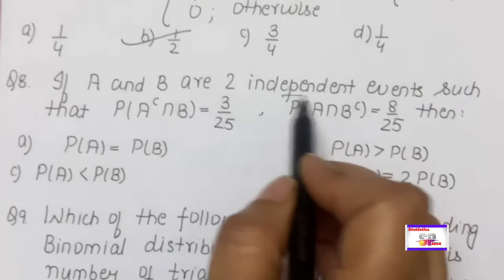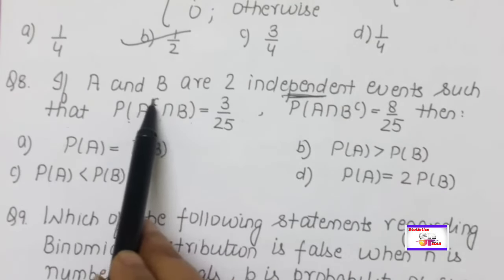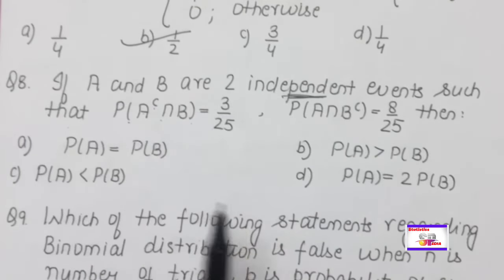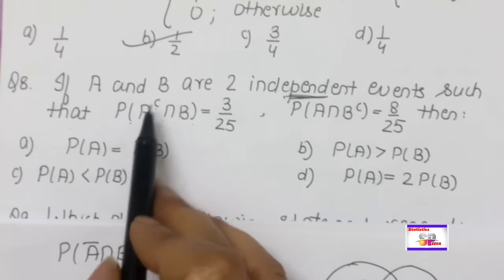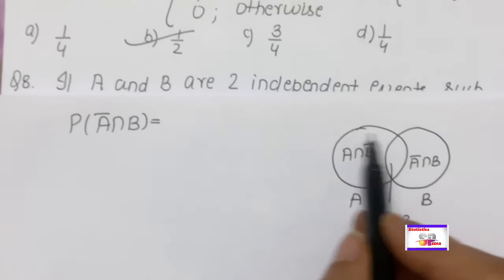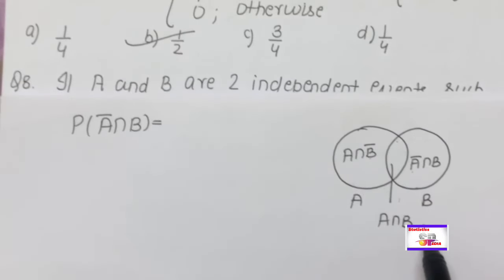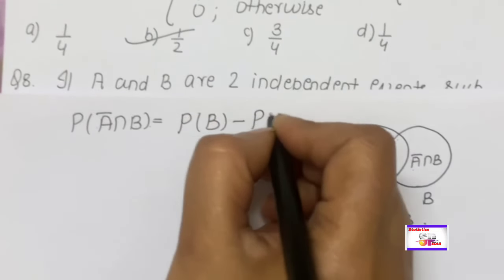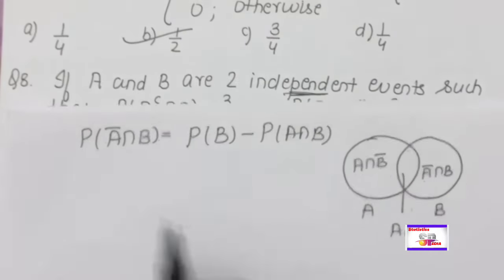If A and B are two independent events — note that 'bar' means complementary — two probabilities are given and the relation between P(A) and P(B) is asked. In the question we have Ā∩B and A∩B̄. Draw a Venn diagram: the region with B but not A is B̄'s complement area, and so on. Write down the formula: P(Ā∩B) = P(B) − P(A∩B), which equals 3/25.